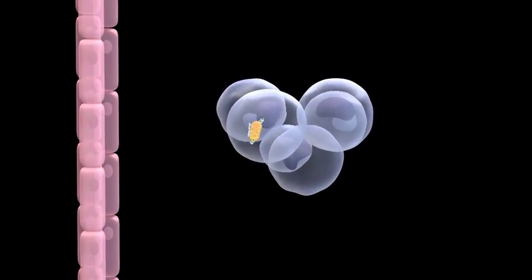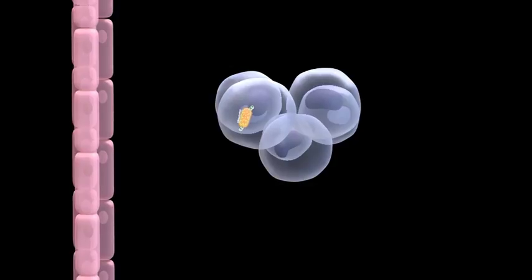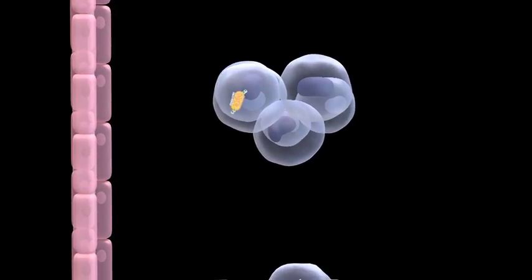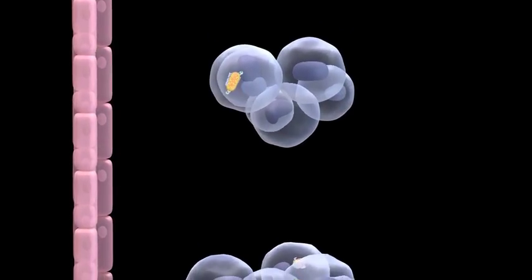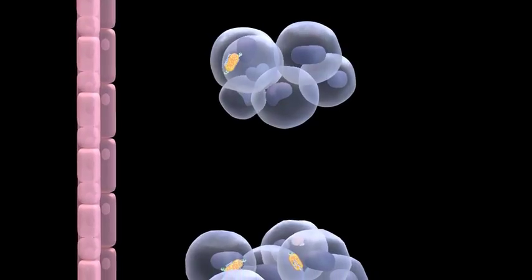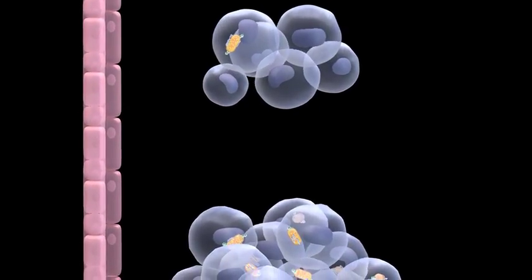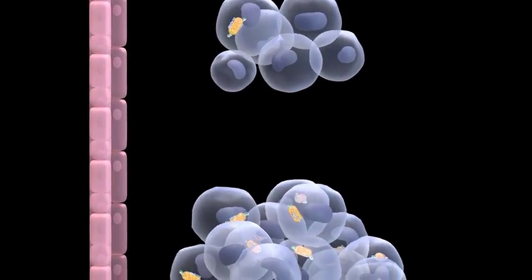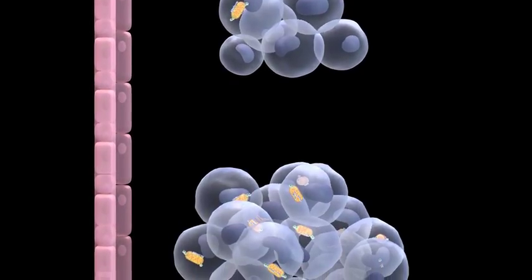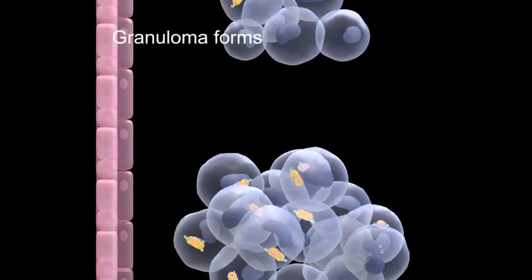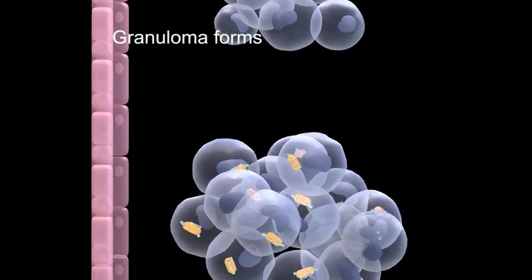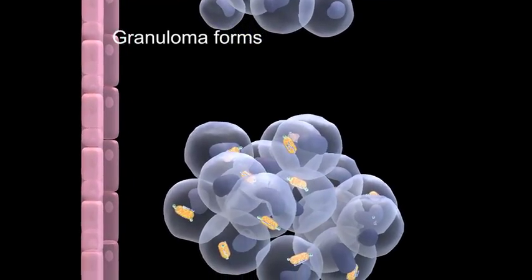Once inside the host's body, the bacteria employ new tactics to grow and spread. They recruit new monocytes to the original infected monocyte by a different mechanism from the one I have just described. This forms the tuberculous granuloma within which the bacteria can multiply and get ready to invade the next host.